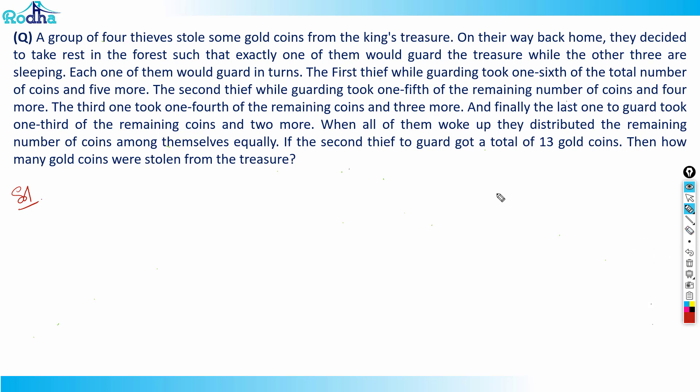A group of four thieves stole some gold coins from the king's treasure. On their way back home, they decided to rest in the forest such that exactly one of them would guard the treasure while the other three slept. The first thief while guarding took one sixth of the total coins and five more. The second took one fifth of the remaining coins and four more. The third took one fourth of remaining coins and three more. The last one took one third of remaining coins and two more. When all woke up, they distributed the remaining coins equally. If the second thief to guard got a total of 13 gold coins, how many gold coins were stolen from the treasure?